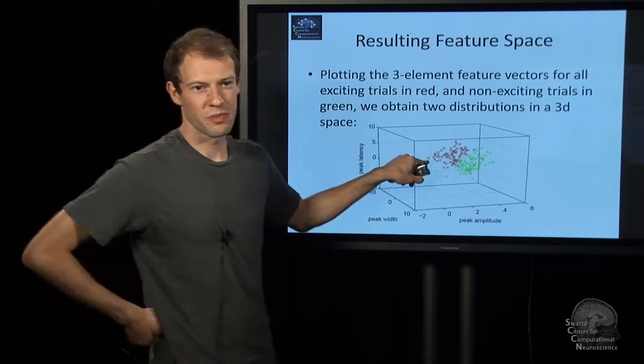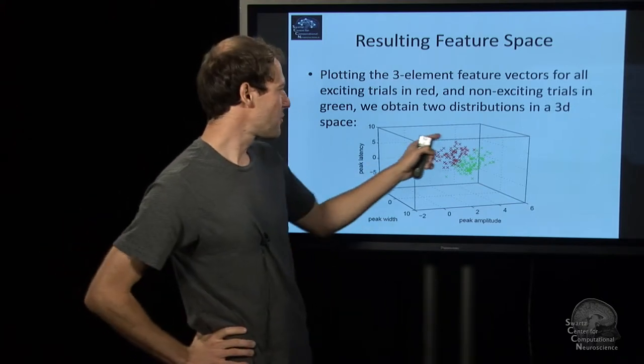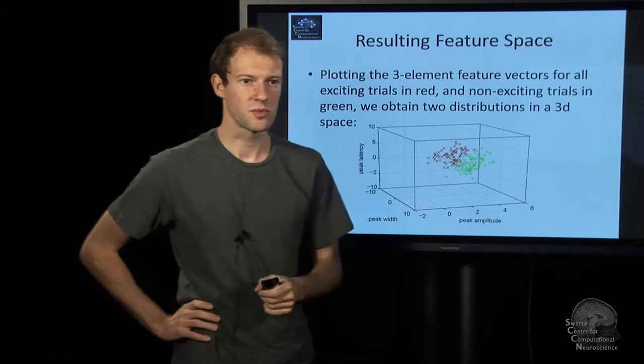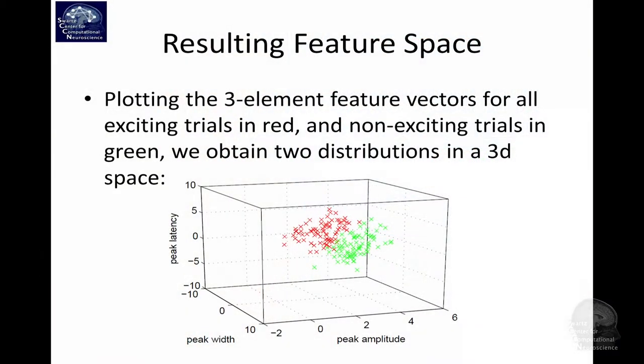This is where you draw, basically place the dot in this 3D space here. If you do that for all the exciting trials, you get this distribution. All the non-exciting, you get that distribution. That already reveals some interesting structure. That is the kind of representation that we call the feature space. It's the space of features. Normally that space is much higher dimensional, not just 3. It might be 10,000 or so in some cases. But here it's rather simple for illustration purposes.